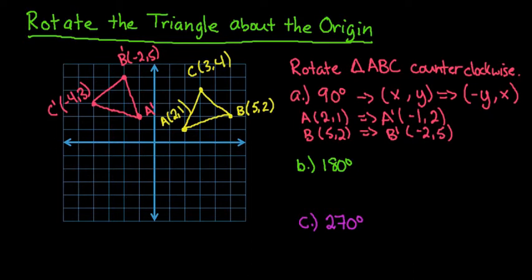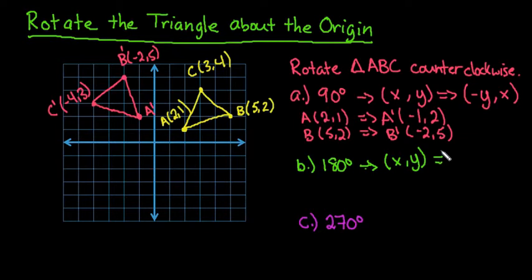For 180 degrees, what this is going to do is put us in quadrant 3. Since we're starting in quadrant 1, 180 degrees would put us over in quadrant 3. What's going to happen mathematically is we're going to take our (x, y) coordinates and just change the sign of both of them, so this would become (-x, -y).